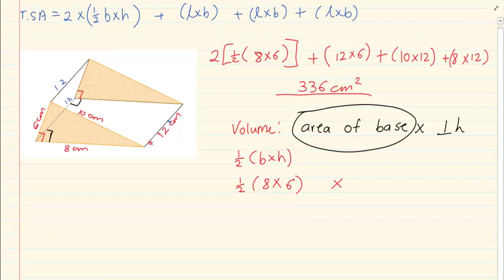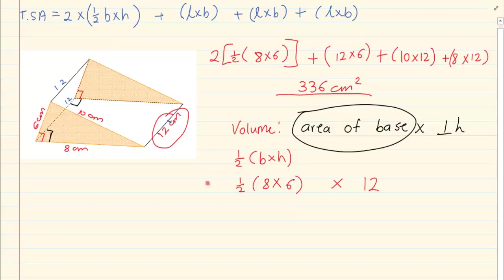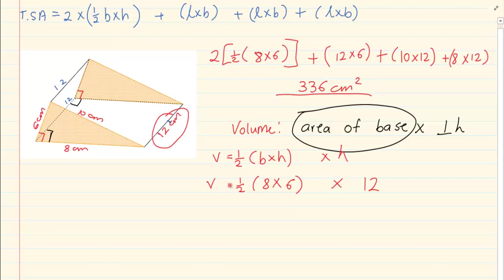Now the perpendicular height refers to the distance between the two bases. In this case that would be 12. So the volume is going to equal half times 8 times 6 times 12.